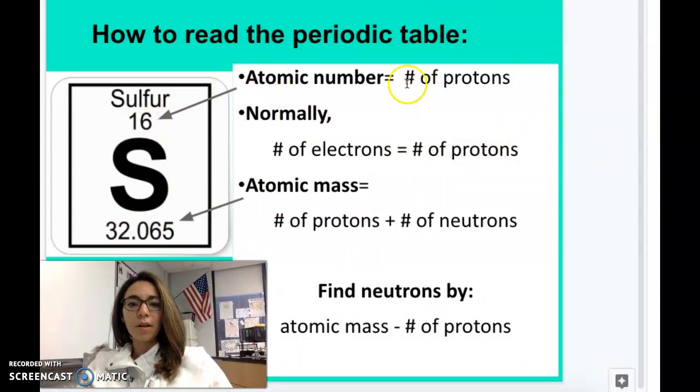That top number, the atomic number, that is the number of protons in the atom. So every atom of sulfur will have 16 protons in the nucleus of the atom. Normally, and in our case, every time, the number of electrons also equals the number of protons. So again, for sulfur, we will have 16 protons and 16 electrons for every atom.